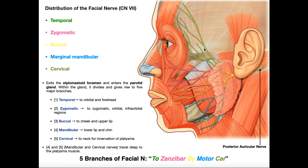There are five branches you typically need to know, and there's a neat mnemonic to memorize them from superior to inferior: 'To Zanzibar by motor car.' It just kind of rolls off the tongue and gives you the first letter of each branch: temporal, zygomatic, buccal, marginal mandibular, and cervical.